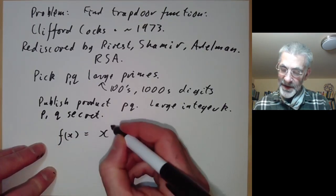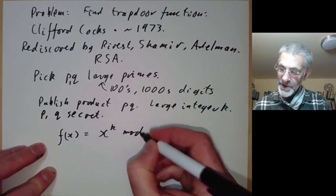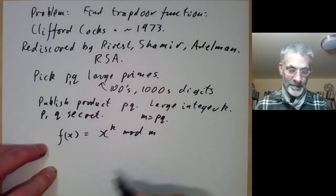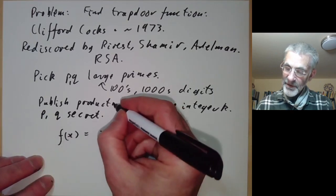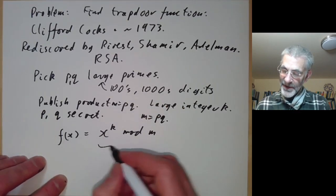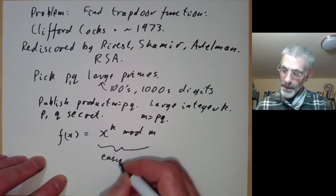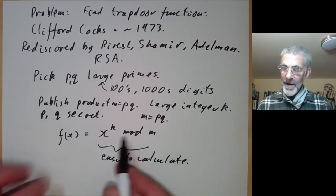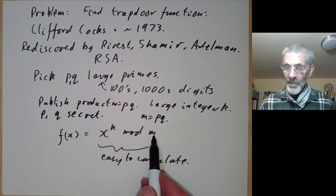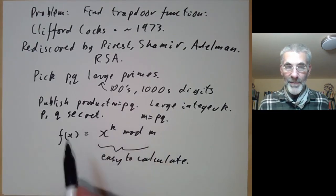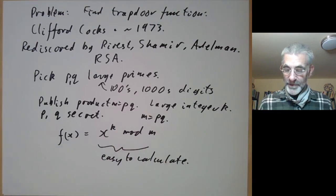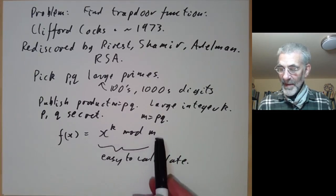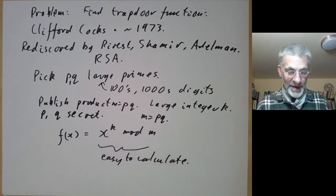Your trapdoor function is given by f(x) = x^k modulo m, where m is this number pq. We've published m, and you notice this is easy to calculate because we showed earlier that calculating powers modulo an integer can be done fairly rapidly by writing k in binary and remembering to reduce mod m at each step.